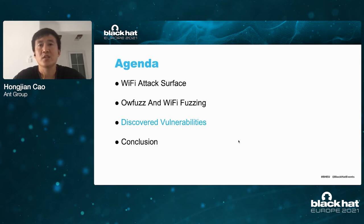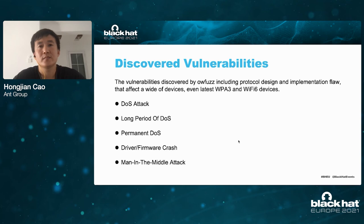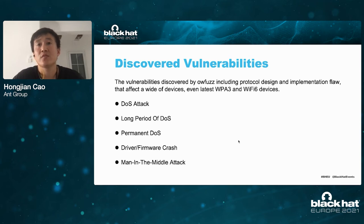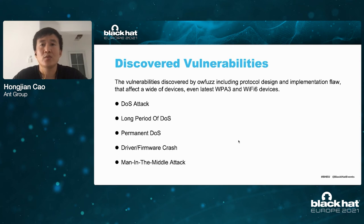Next, I will talk about the vulnerabilities discovered by Ofos that exist in different vendors. The vulnerabilities include protocol design and implementation flaws that affect a wide range of devices, including the latest WPA3 and Wi-Fi 6 devices. According to the impact of these vulnerabilities, there are five following types, and some of them exist at the same time.